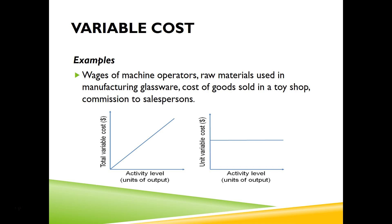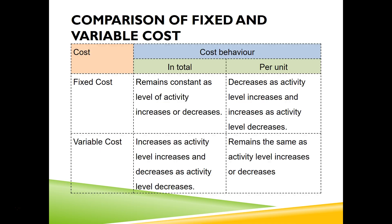The unit variable cost does not change, but again this is within a relevant range. For example, if I produce 10,000 chairs I may need 10,000 pieces of wood, but perhaps the supplier gives me a discount because I'm buying a lot, and that's when the relevant range would change and the behavior of that cost would also change. In that new relevant range, however, it would show the same behavior.